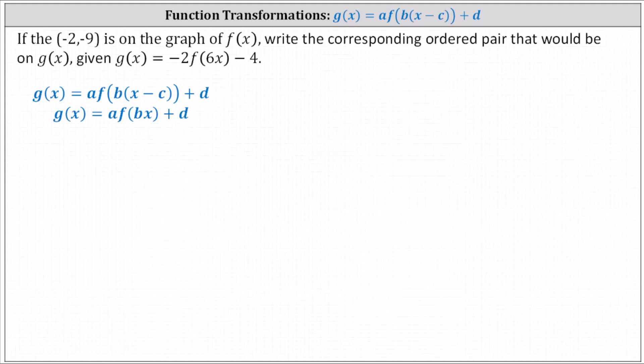Notice the given function g of x is in the form shown here, where c equals zero. Comparing the forms, a equals negative two, b equals six, c equals zero, and d equals negative four.